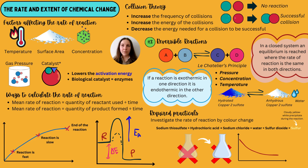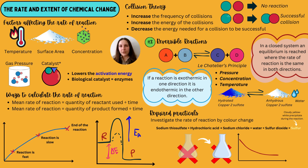Last but not least, we have the catalyst. A catalyst is an additional substance placed into the reaction — it can be used over and over again and will never be used up. However, catalysts can be quite expensive. A catalyst's main job is to lower the activation energy of the reaction — the minimum amount of energy needed for a reaction to occur and for collisions to be successful. Remember, biological catalysts are enzymes, which is a nice link between biology and chemistry.